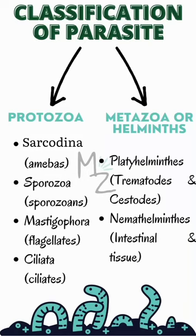Classification of Parasite. Parasites are classified into Protozoa and Metazoa, or Helminths, which are also called Worms.